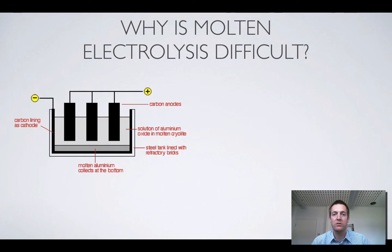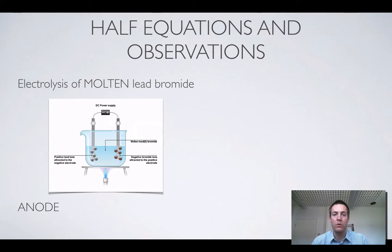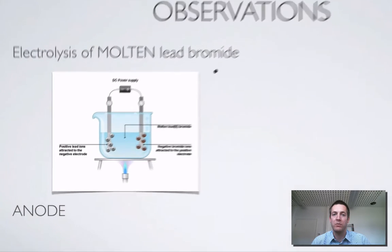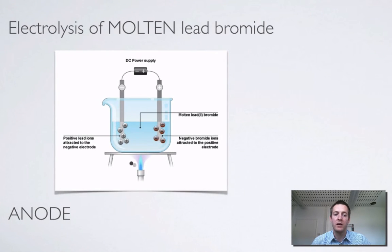As I say, those sorts of things aren't examined too much. What we'd certainly have to be able to do is write half equations for what's going on in an electrolytic cell. So let's have a good look again at the electrolysis of molten lead bromide. We can do this on a Bunsen because lead bromide has an unusually low melting point for an ionic substance.